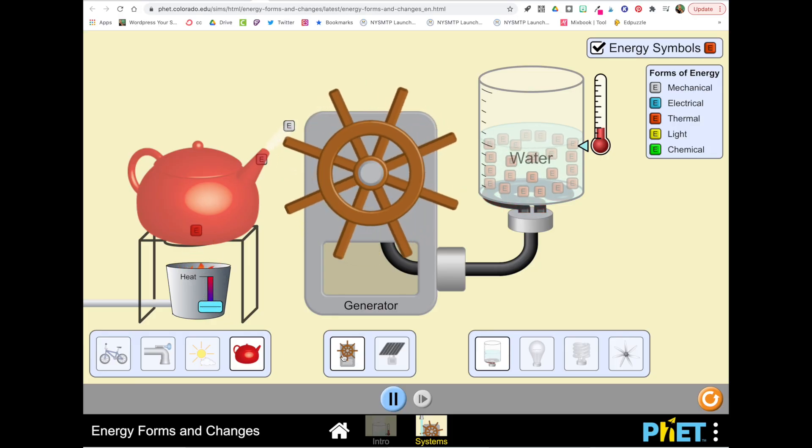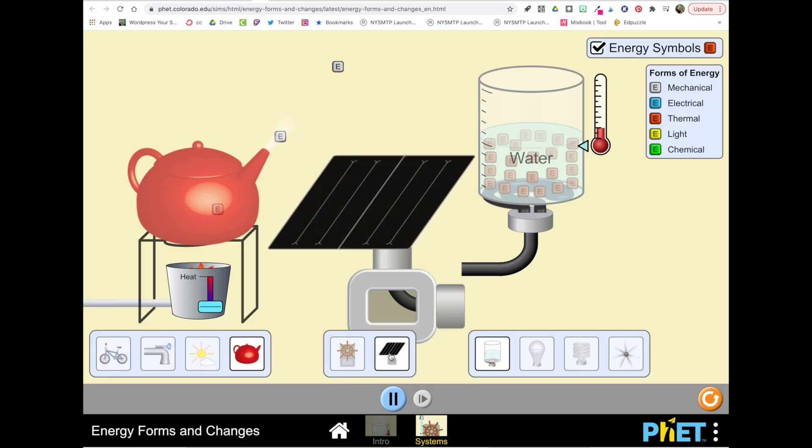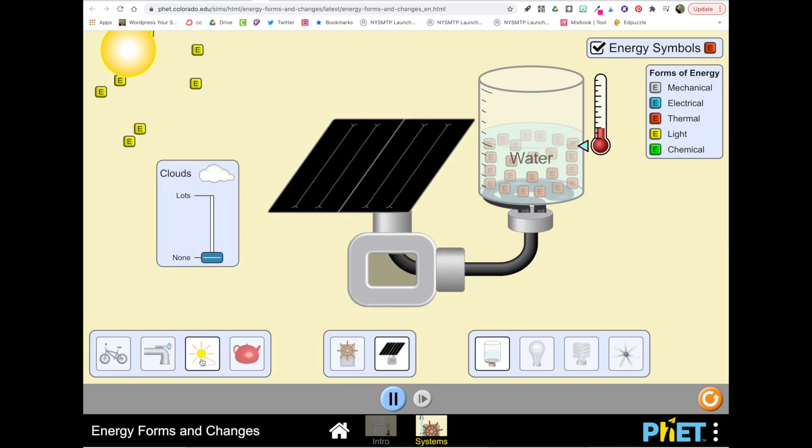In the middle section of the system you have two choices: the first one is a generator and then the second one here is a solar panel.